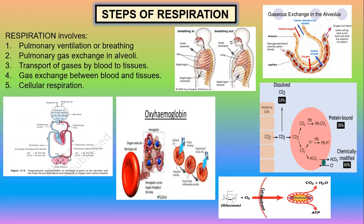Then gas exchange continues in the tissues, from blood to tissues. And finally, cellular respiration — with the help of oxygen reaching into the cells, the food fuel molecules are oxidized, liberating energy, which is trapped in the form of ATP. The waste materials, carbon dioxide and water, are released. That process is called cellular respiration.